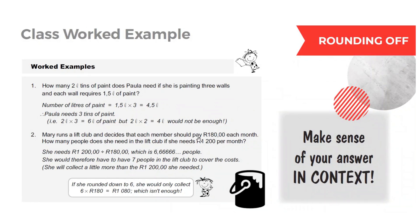And then Mary runs a live club. And to get a certain amount of money, she can't have 6.66 people. So again, make sense of your answer. I can't have a fraction of a person. So we need to round up. Otherwise, she won't have enough money.